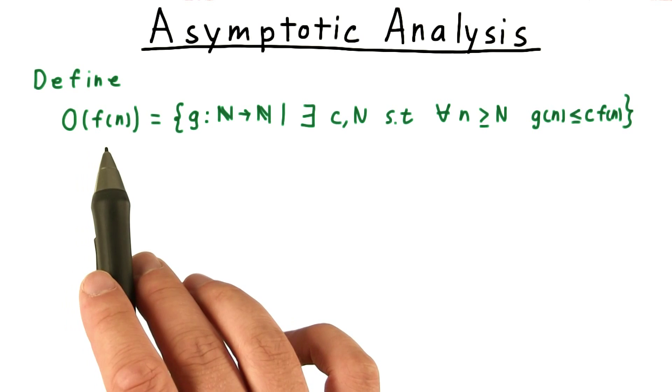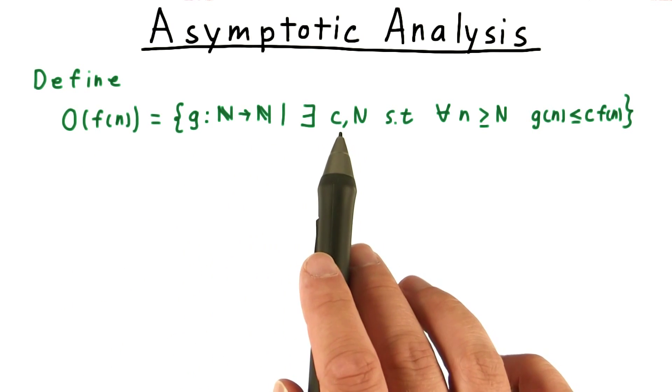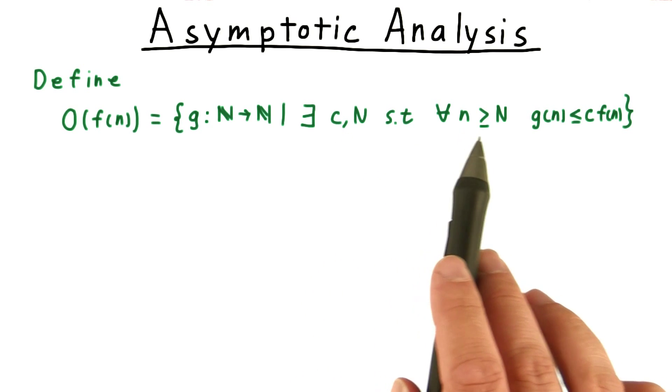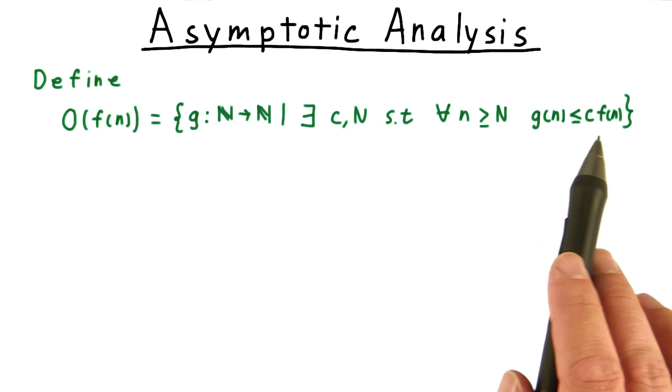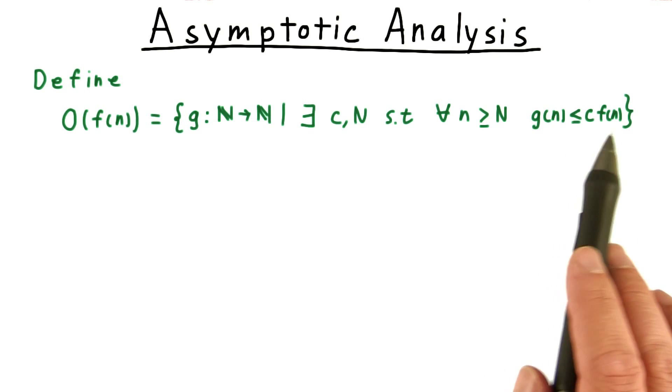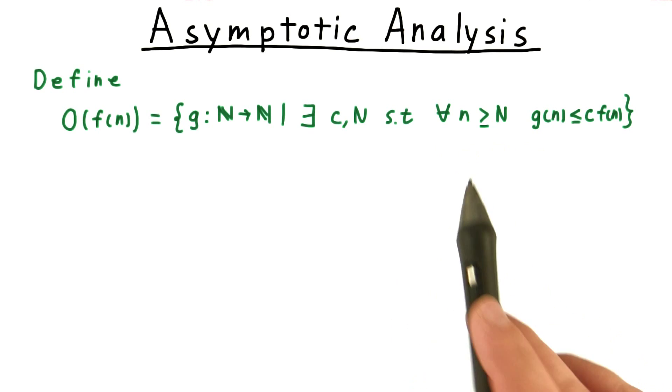We define big O of a function f to be the set of functions g, where there are numbers c and big N, such that for all little n at least as big as big N, g is at most c times f. In other words, c times f is at least g for all sufficiently large n.